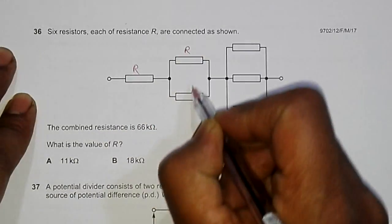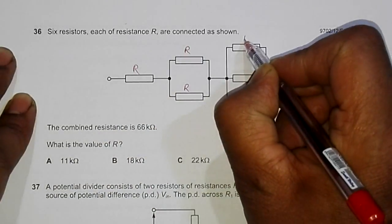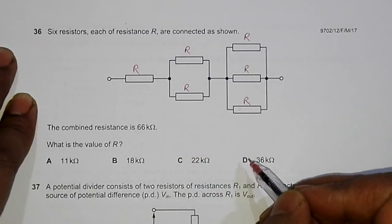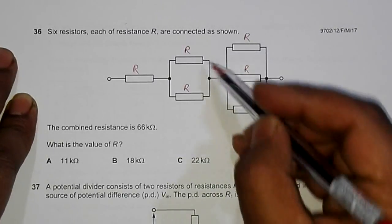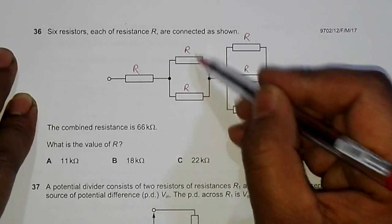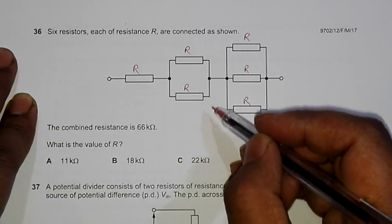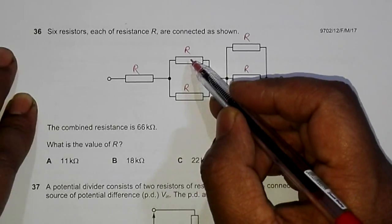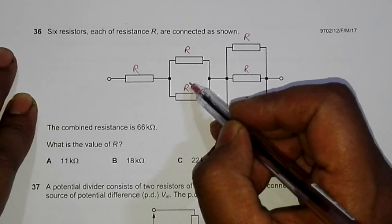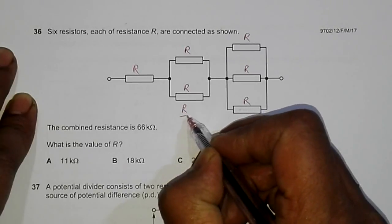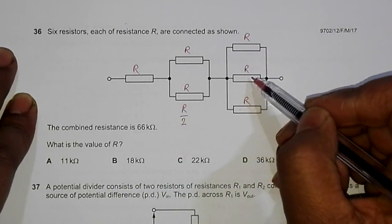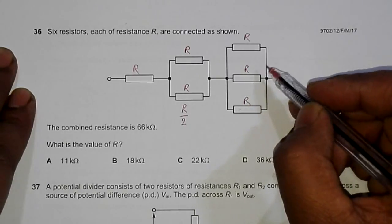Let's label each resistor as R. We can notice that these two R's are in parallel, so the total resistance will be R/2. Here we have three R's in parallel, so their combined value will be R/3.